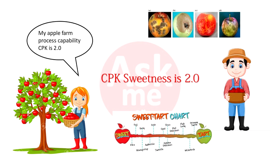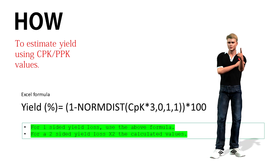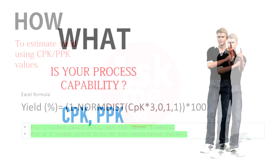However, in one billion apples, only one piece is less sweet — that's the 1 PPB defect. That's all for this week. Till next video, have fun with numbers!